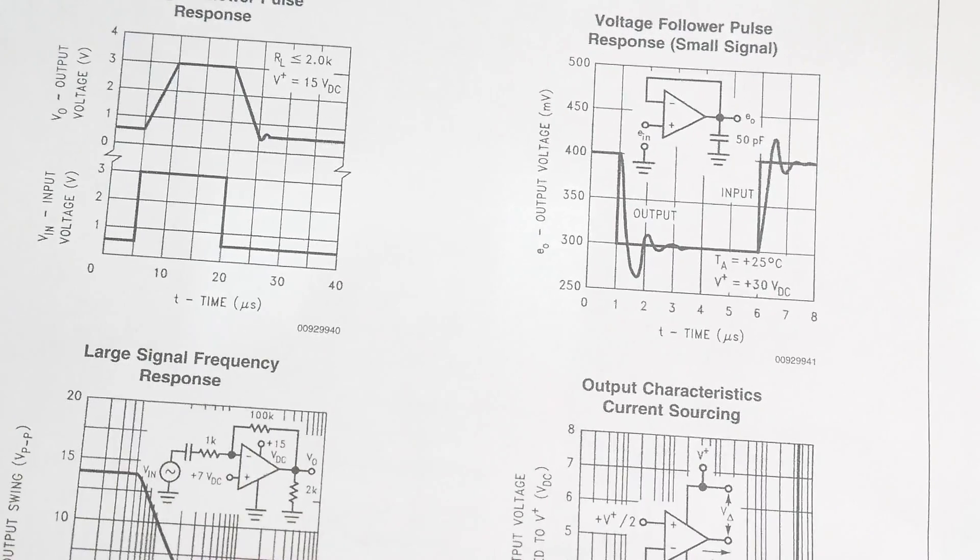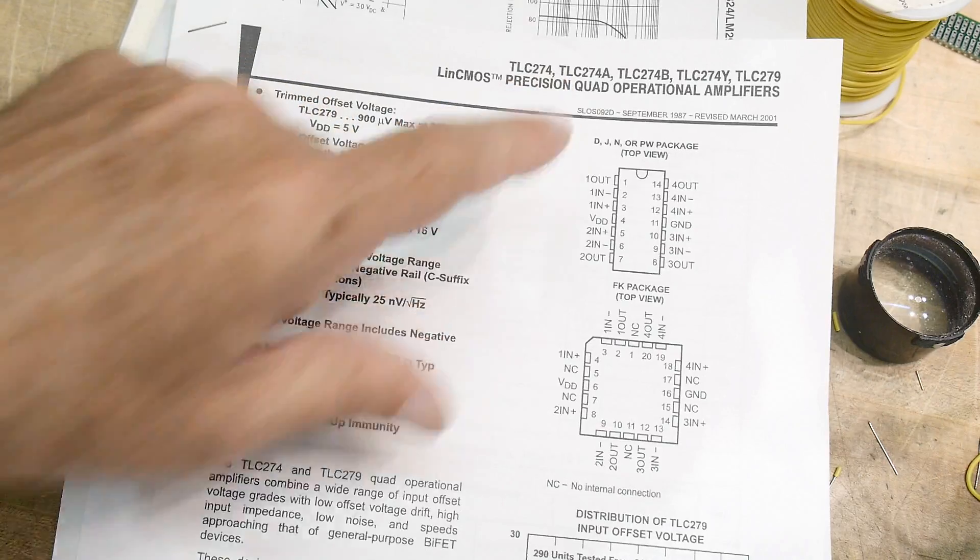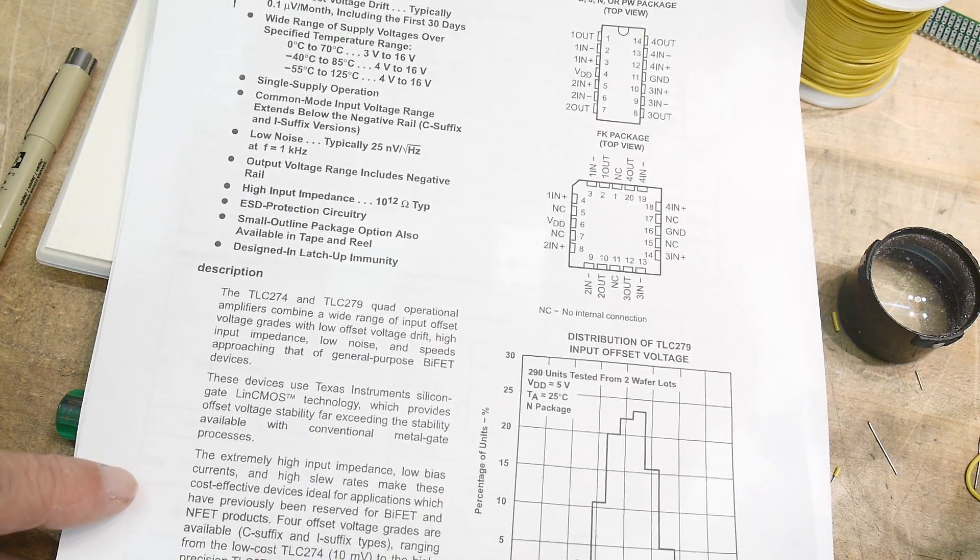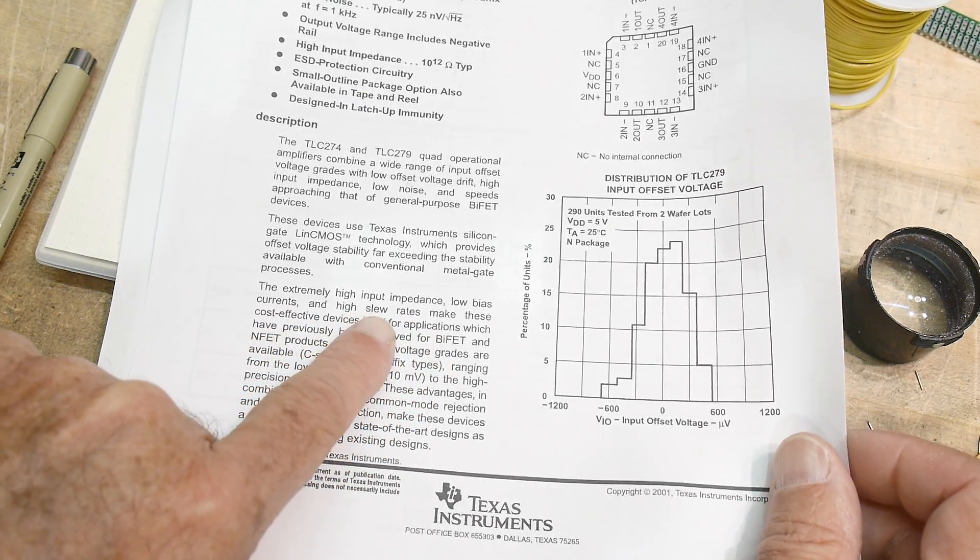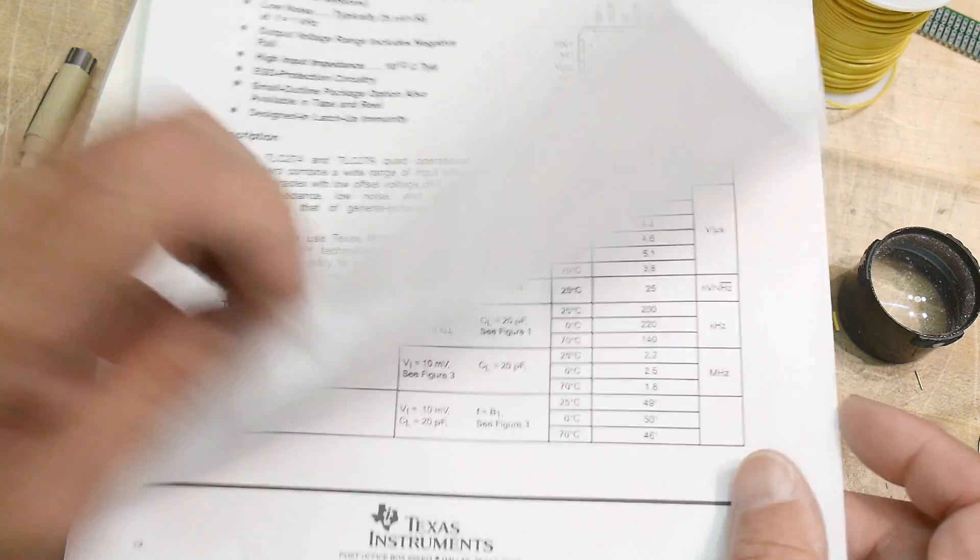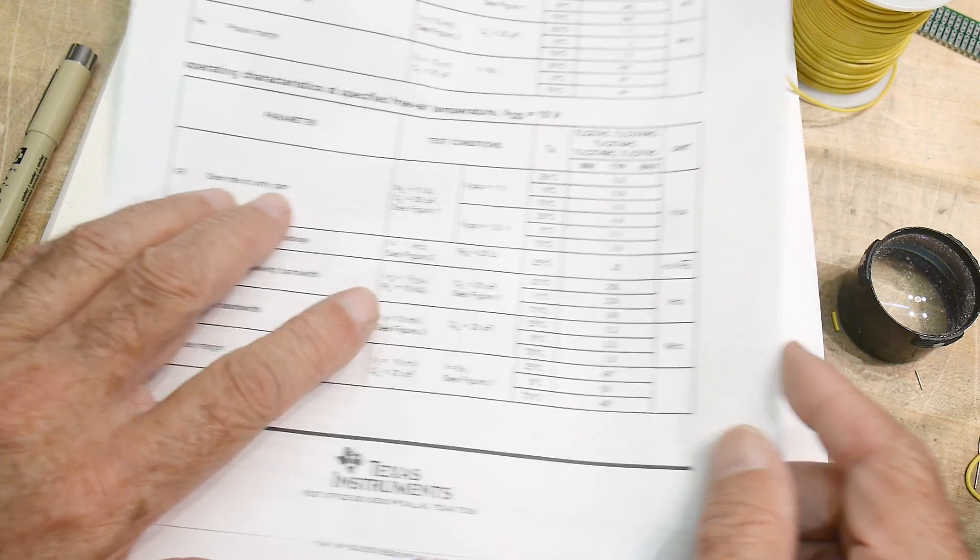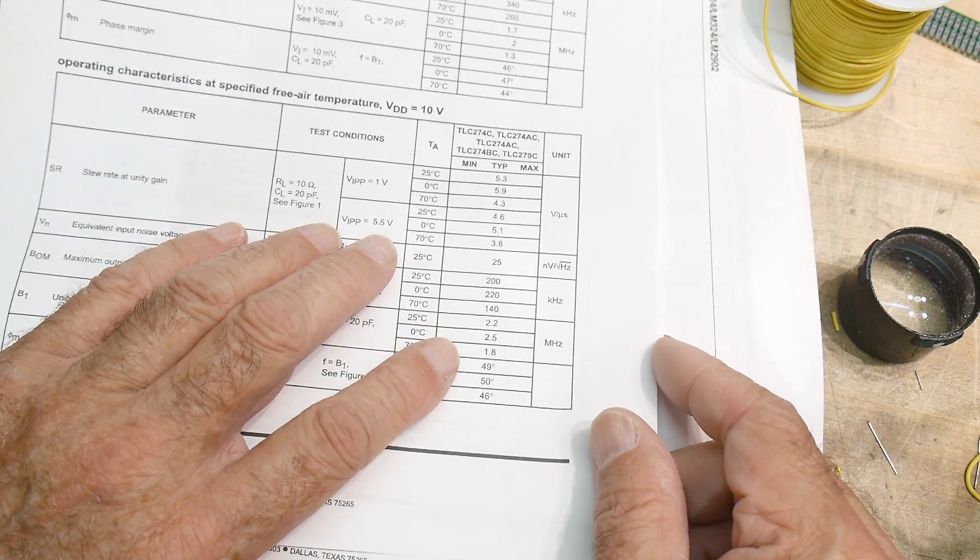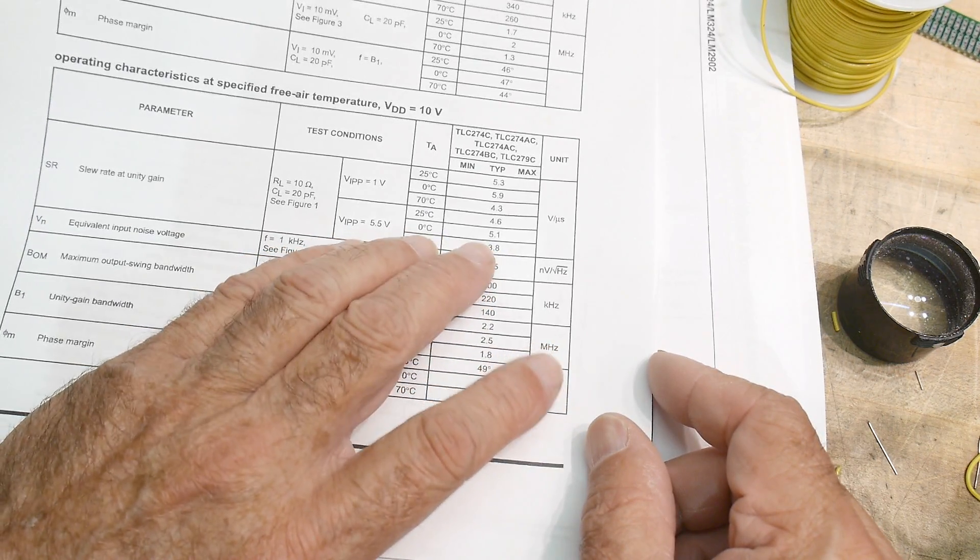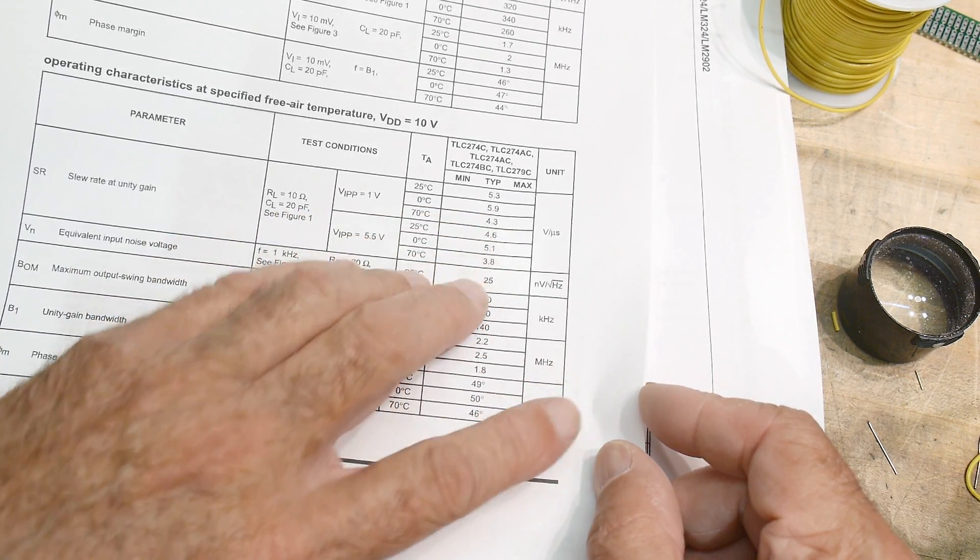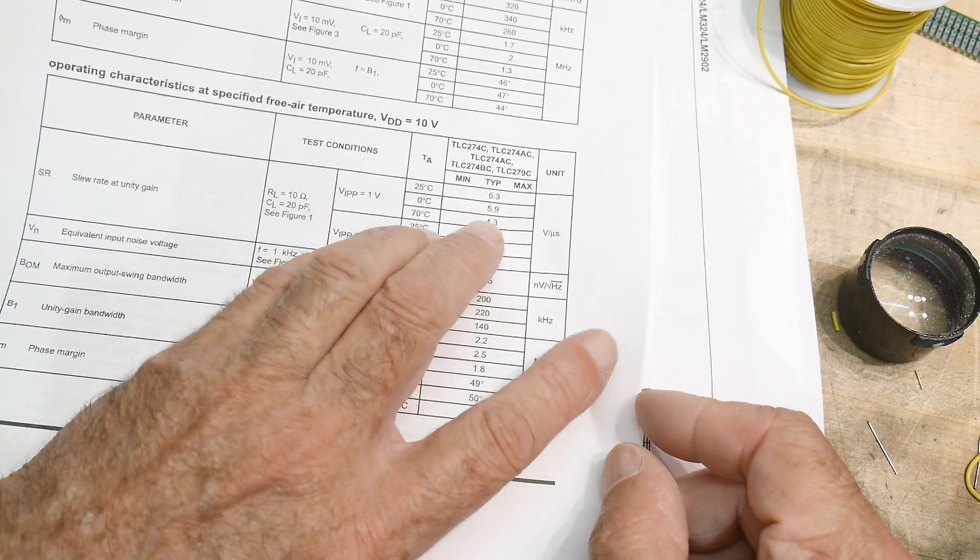With the other part, the TLC274, actually right on the front page it mentions high slew rate - low bias currents and high slew rate. They're touting the slew rate right on the front page. In that number section, they actually have something here - it says slew rate at unity gain.